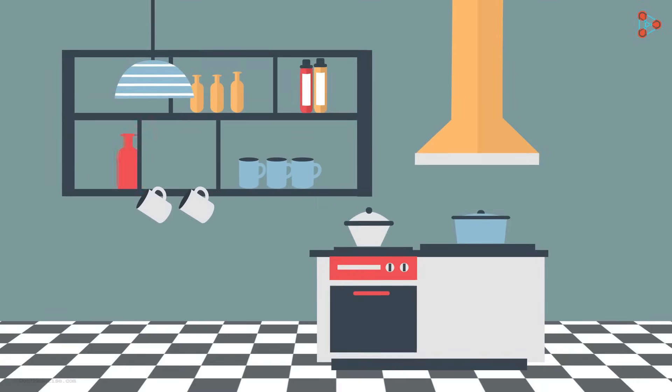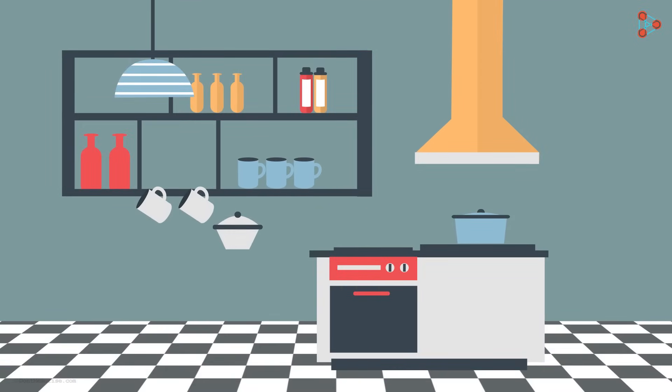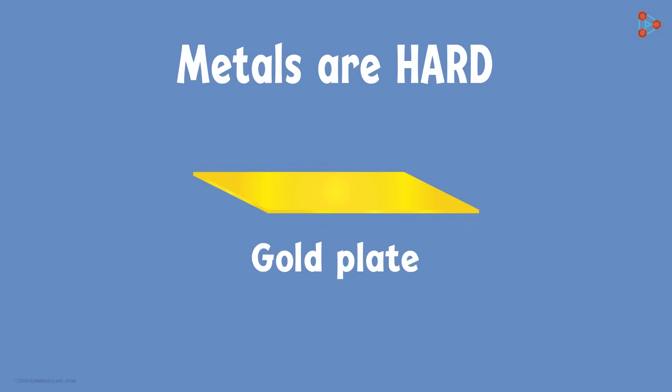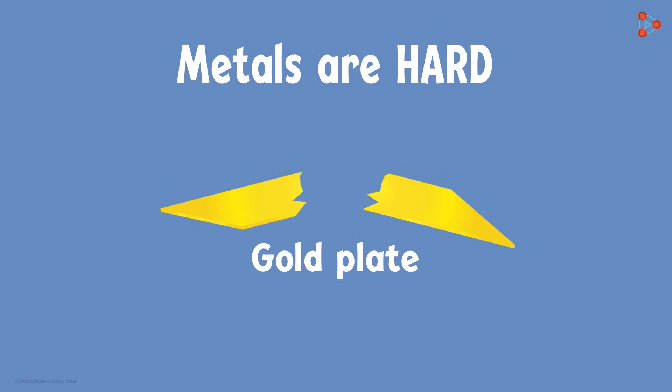Now if the utensil drops on the floor, does it break into parts? No, right? That is because metals are generally hard in nature. However, this hardness varies from metal to metal. A very thin plate of gold, for example, can be easily broken with a little pressure.